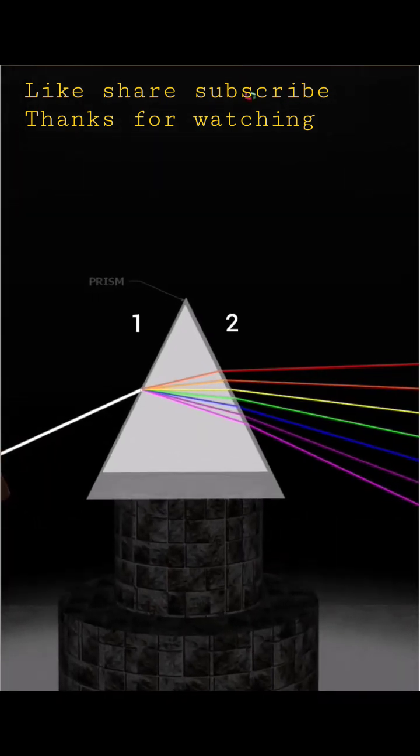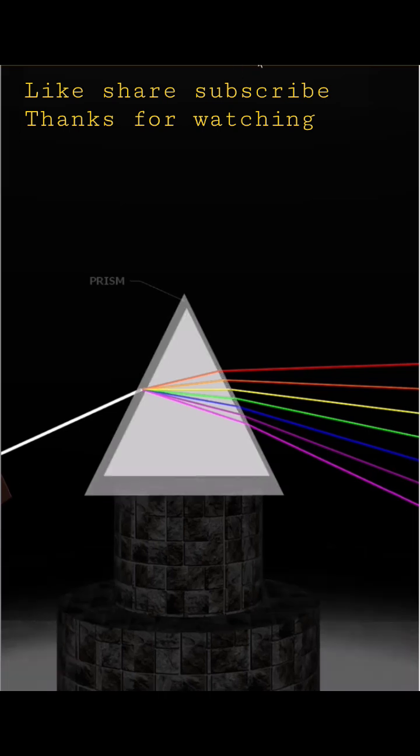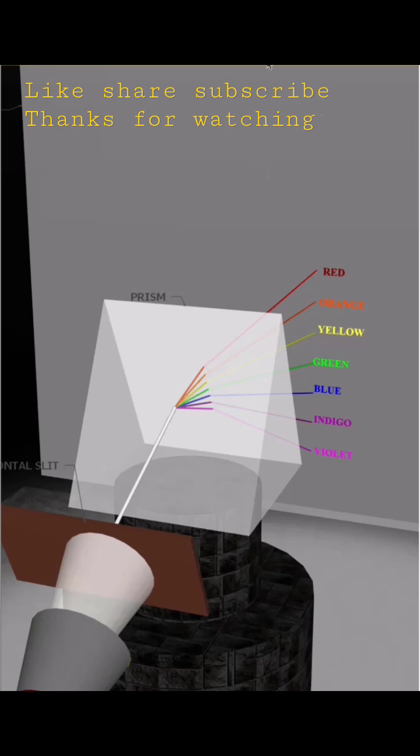When the seven colors return back to the air from the second surface of prism, they again deviate away from their original path and make different angles with respect to their original direction.